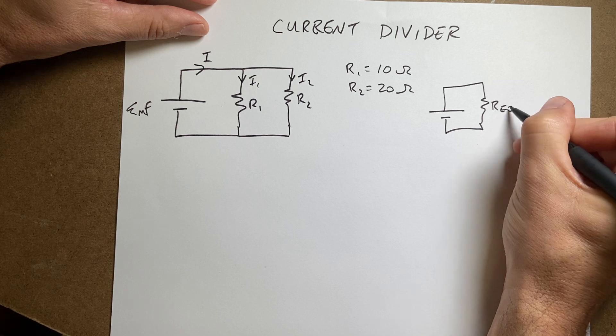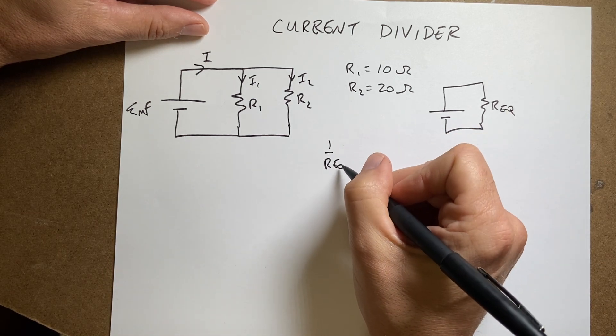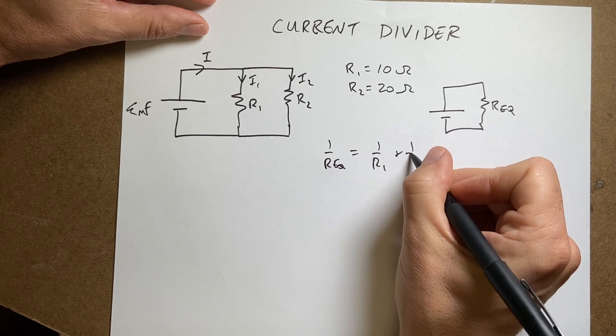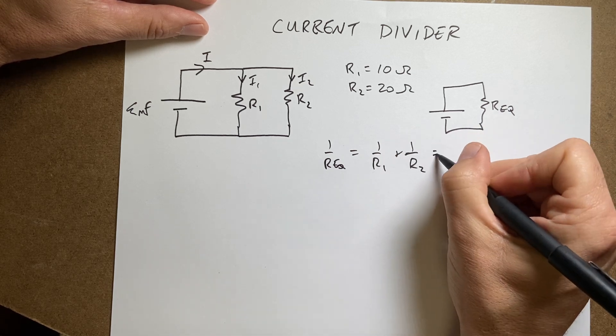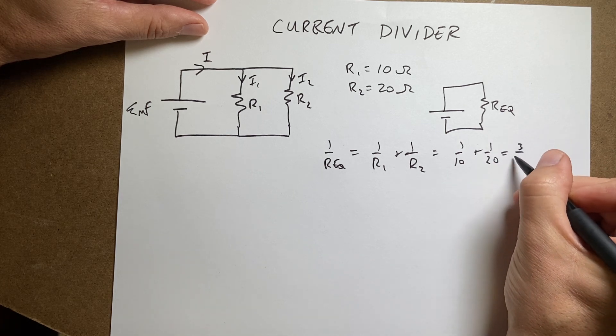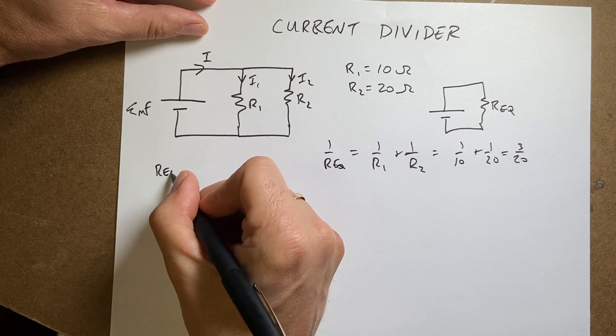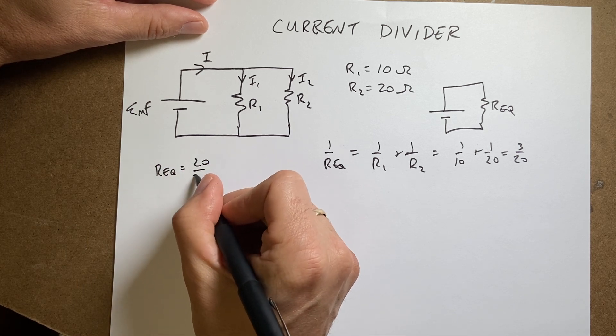R equivalent where 1 over R equivalent is equal to 1 over R1 plus 1 over R2. So this is going to be 1 over 10 plus 1 over 20 equals 3 over 20. So R equivalent is equal to 20 over 3 ohms.